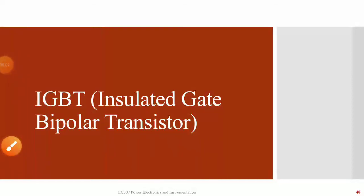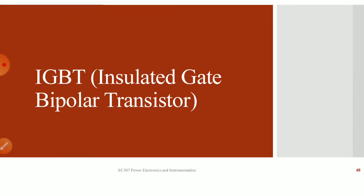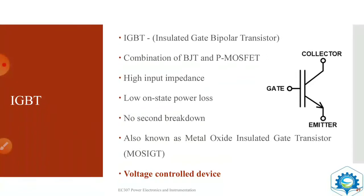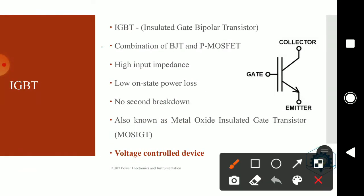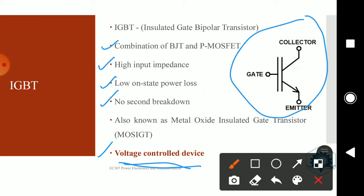Hello everyone. In this video we are going to go through the IGBT or insulated gate bipolar transistor. The IGBT is a combination of the MOSFET and the BJT. It is having a high input impedance, a low on-state power loss, and no second breakdown. One of the most important features of the IGBT is that it is a voltage control device. It is also known as a metal oxide insulated gate transistor. The IGBT has three terminals: a collector, emitter, and a gate.